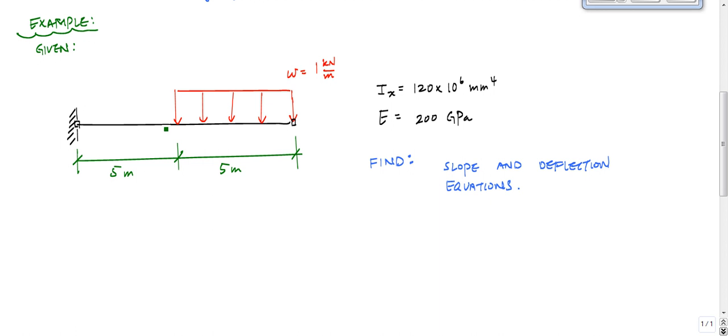And what we're given here is a cantilever beam. I'm going to label stuff. Here's A, call this point B, and this point C right here. And what we want to do, we're given that this beam has a moment of inertia about its axis, bending about the x-axis of 120 times 10 to the 6 millimeters to the 4th, and the modulus of elasticity is 200 GPa. So it's like a steel I-beam or something. And the loading here is W equals 1 kilonewton per meter, and that's applied between B and C. And what we want to find are the slope and deflection equations using the double integration method.